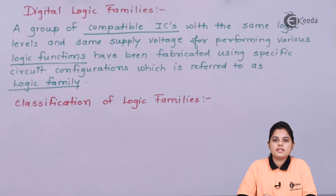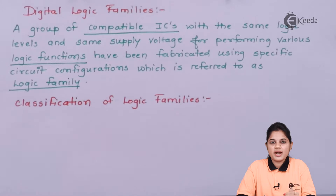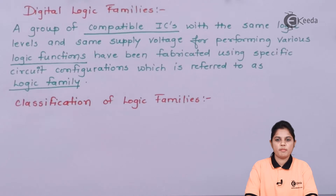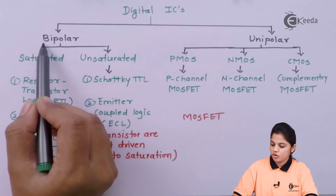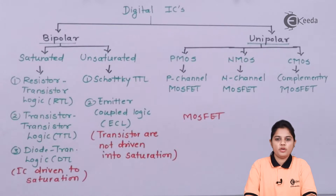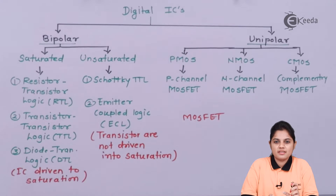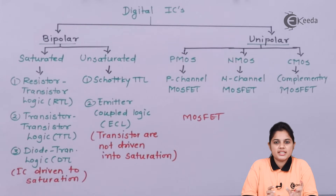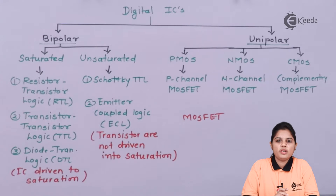The digital logic family can be classified on various criteria depending on what kind of component or material is used. The classification of digital ICs can be bipolar or unipolar. These are words we are familiar with from semiconductor devices — bipolar is used in BJT, that is bipolar junction transistor, and unipolar is used in FET, that is field effect transistor.